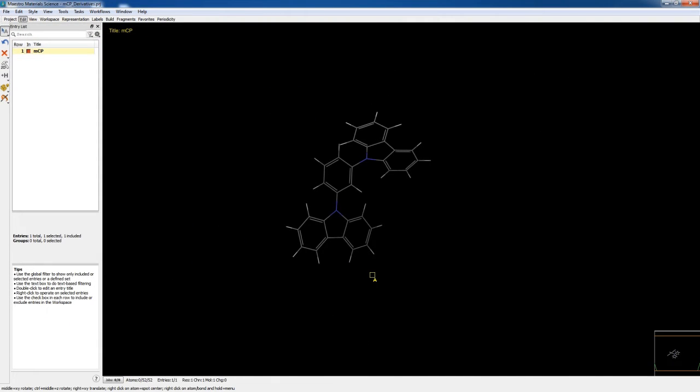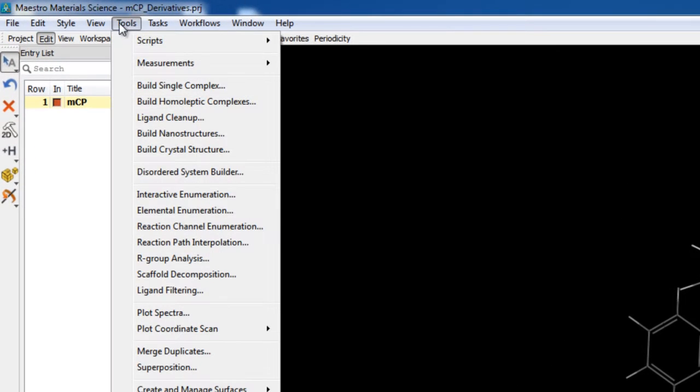Next let's use the interactive enumeration tool to generate a focus library around this core. We'll go to tools, interactive enumeration.